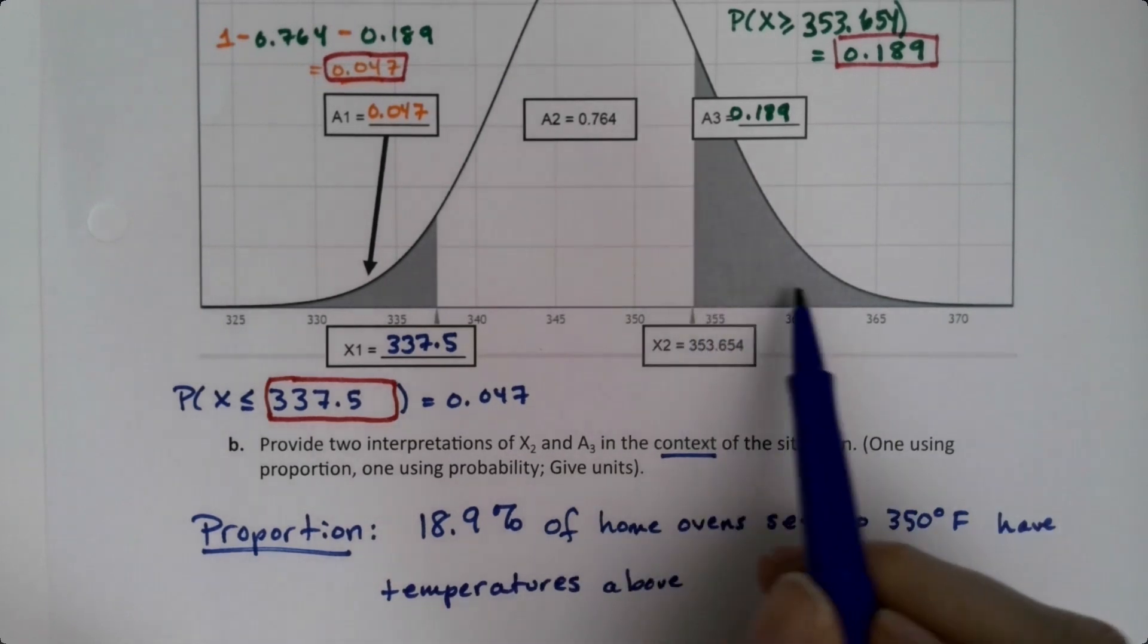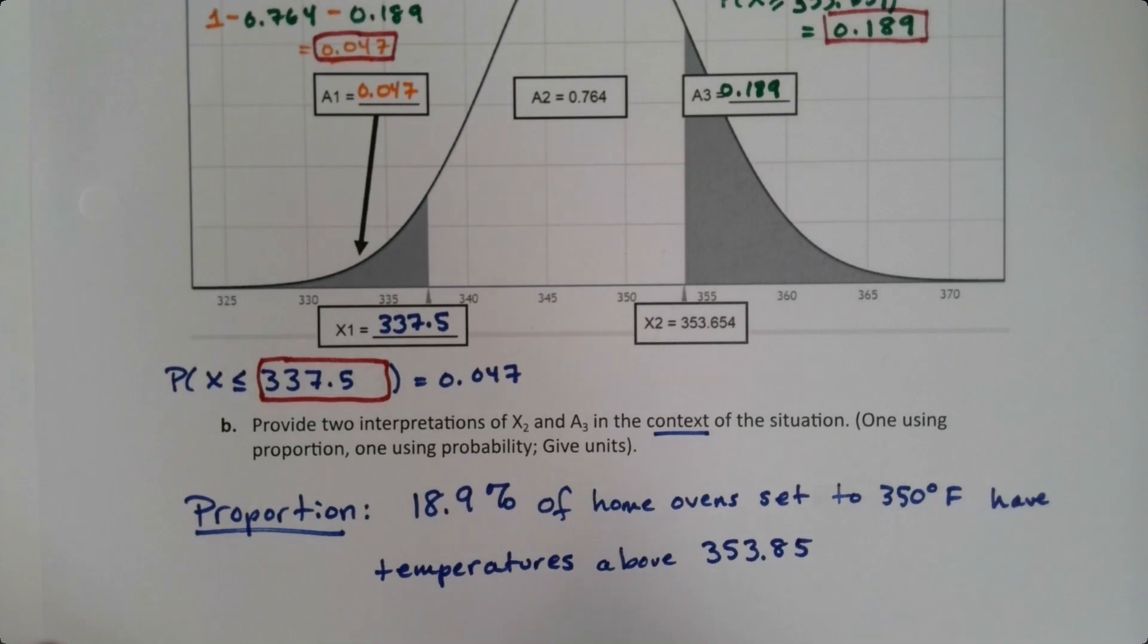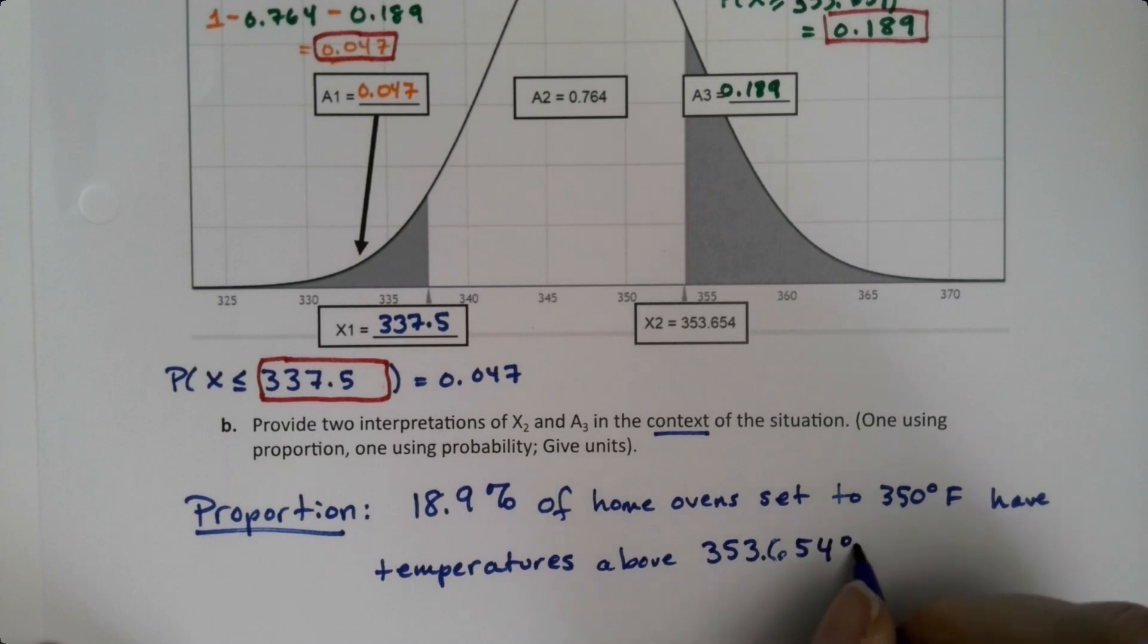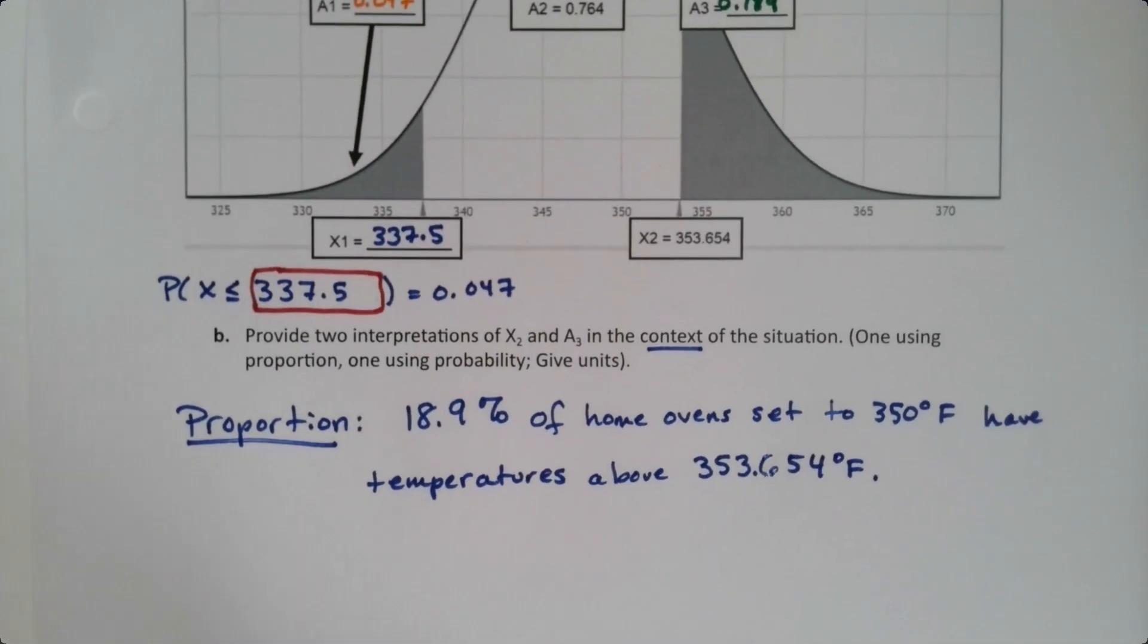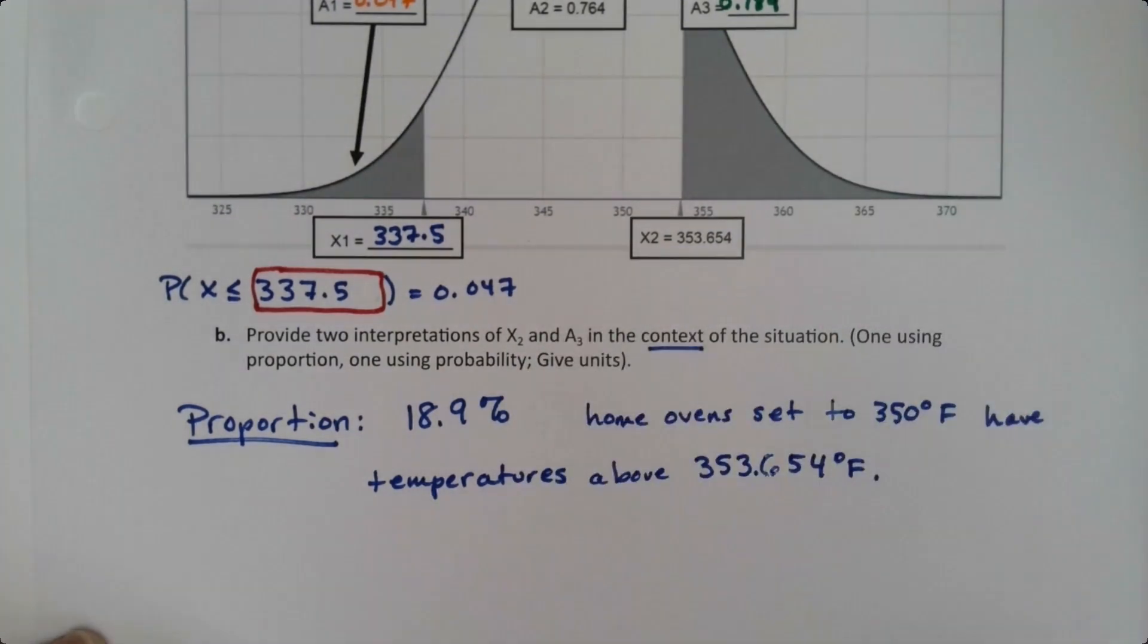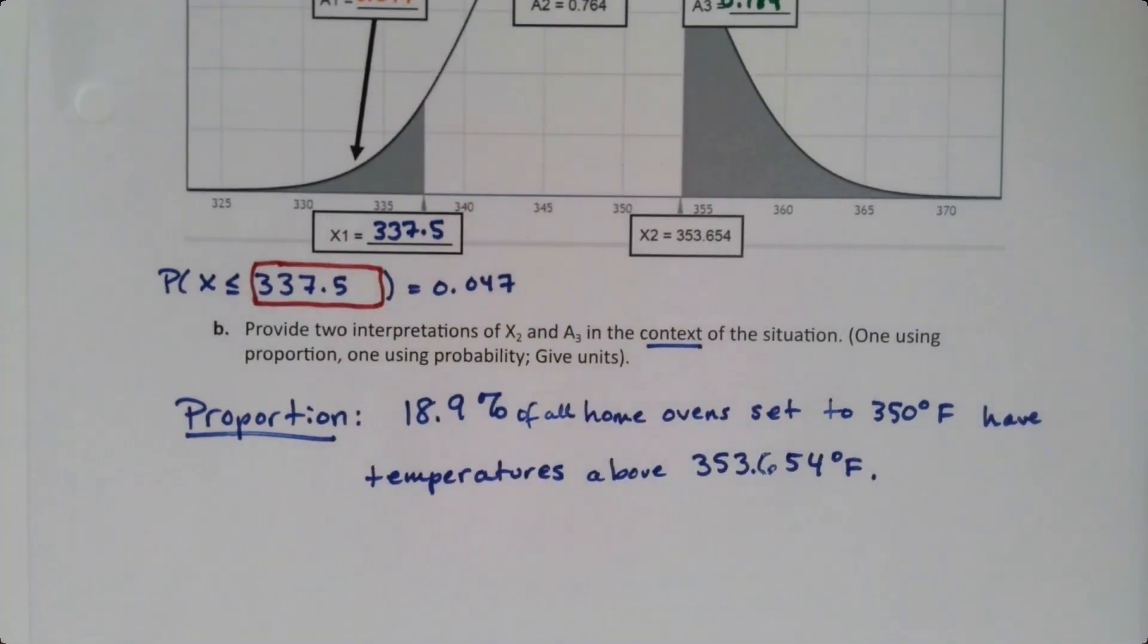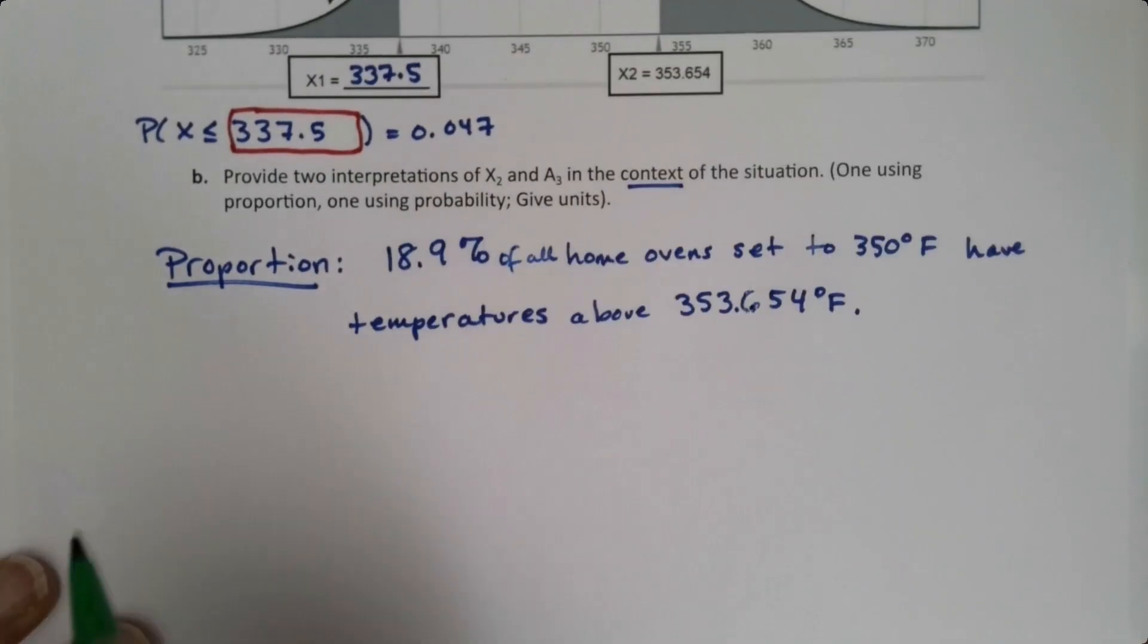Have temperatures above 353.654 degrees Fahrenheit. I should say of all home ovens. We like to put that all in there just to remind us of our context. So 18.9% of all home ovens set to 350 have temperatures above 353.654.